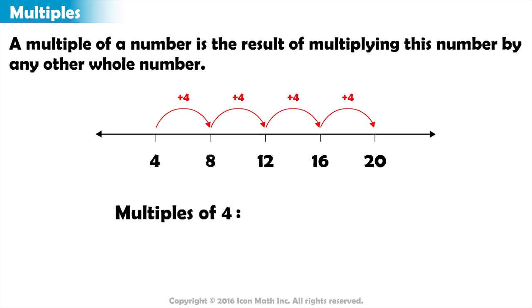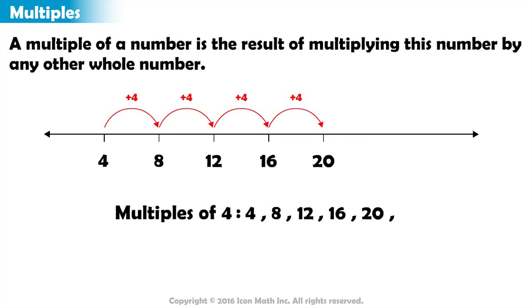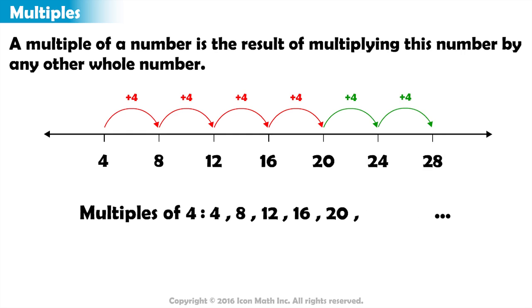The multiples of 4 can be represented with the sequence 4, 8, 12, 16, 20, and so on. And these dots indicate that we can keep producing other multiples for the number 4. Also note that the number 4 is a multiple of itself.